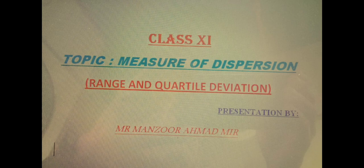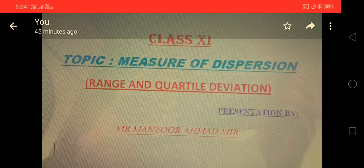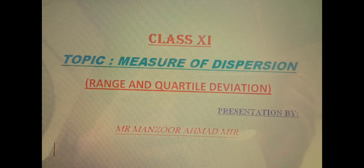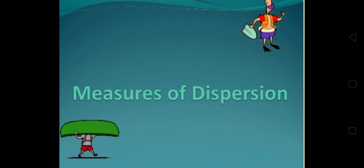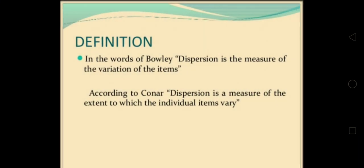And the two methods how dispersion is measured - that is range and quartile deviation. First we will discuss what is meant by measure of dispersion. The definition given by Bowley: dispersion is the measure of the variation of the items.